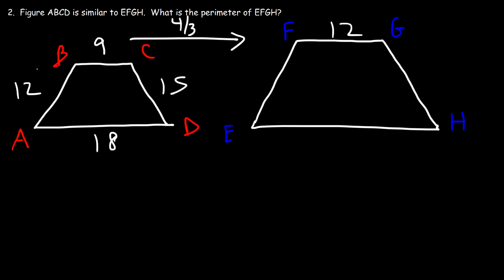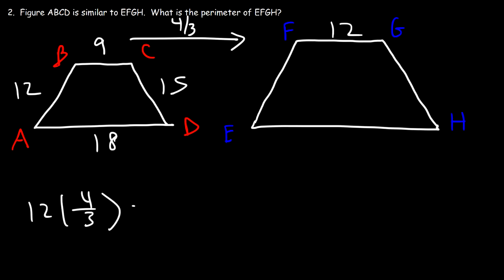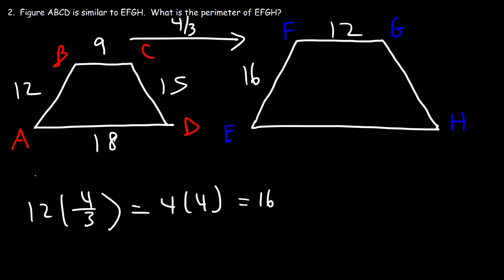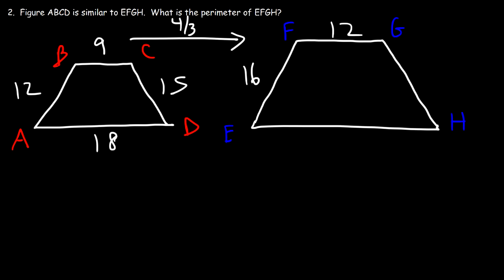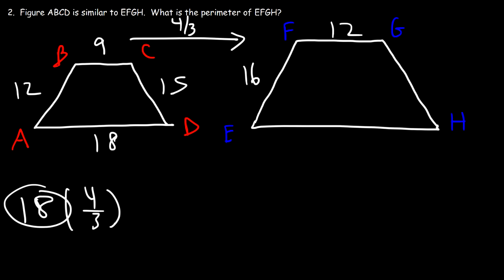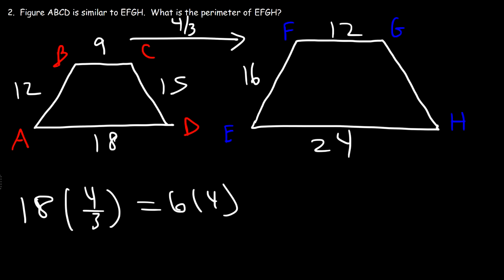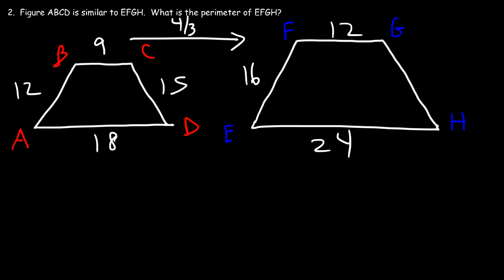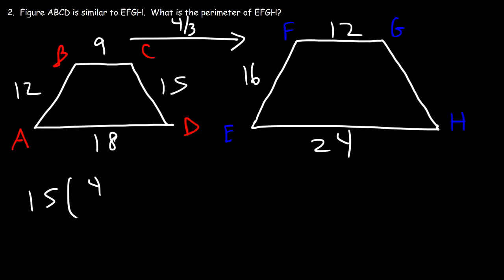Using the enlargement ratio of 4/3, multiply each side of the first figure. Starting with 12: 12 divided by 3 is 4, times 4 is 16, so EF is 16. For the side of 18: 18 divided by 3 is 6, times 4 is 24. For the last side GH: 15 divided by 3 is 5, times 4 is 20.